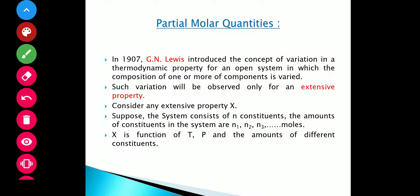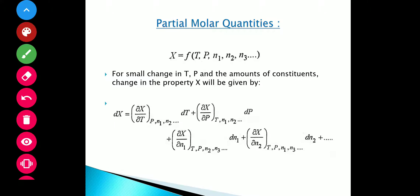Now consider any extensive property X, and your system consists of N constituents such that the amounts of constituents in the system are N1, N2, N3, and so on. This extensive property will be a function of temperature, pressure, as well as the amount of different constituents present in the system. Mathematically, the extensive property is a function of temperature, pressure, and the number of moles of different constituents.